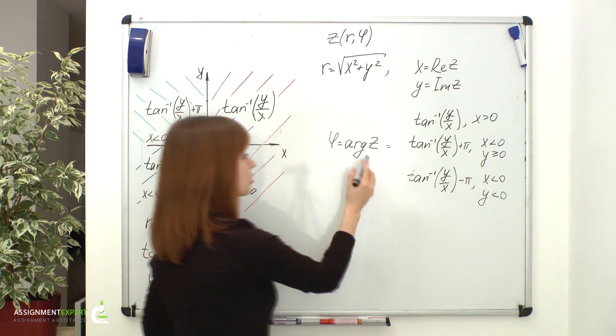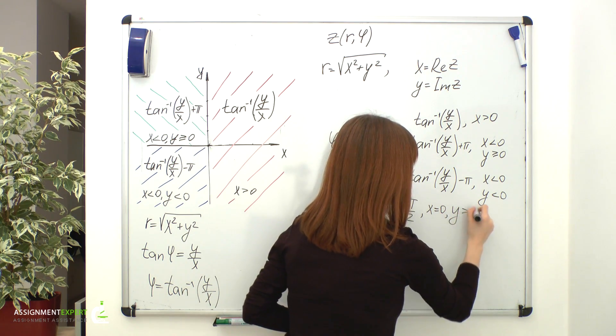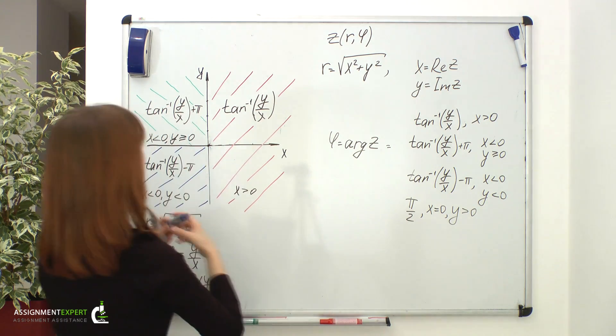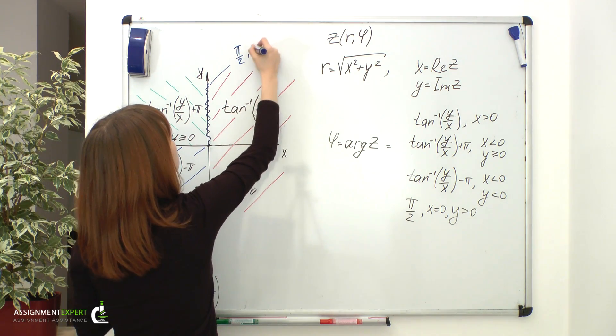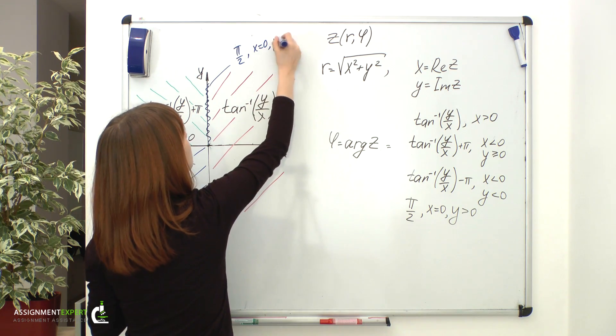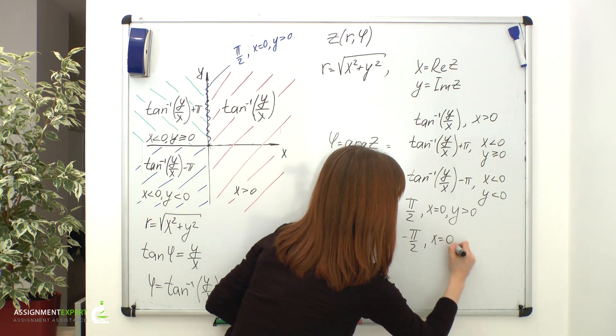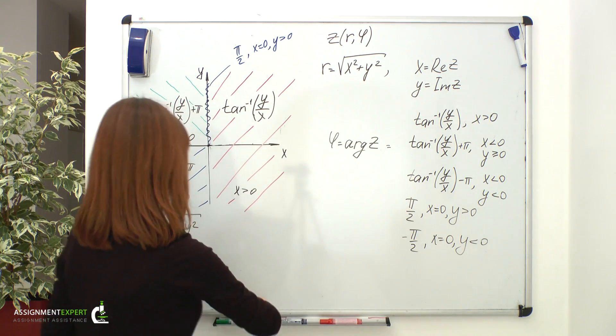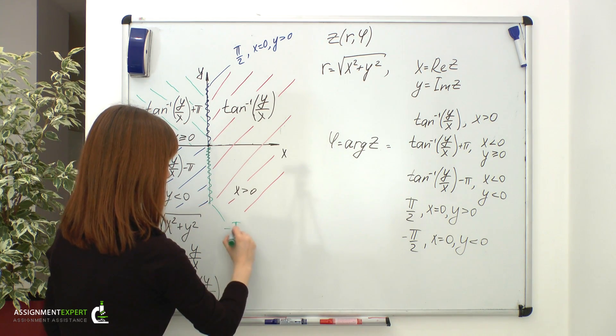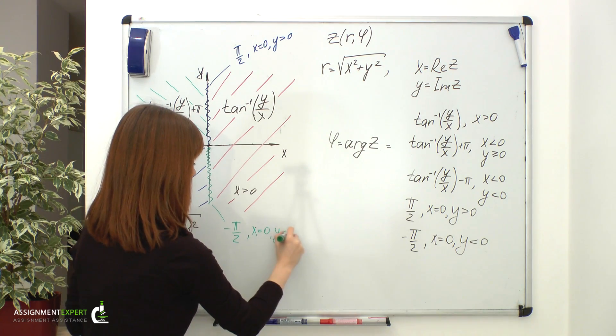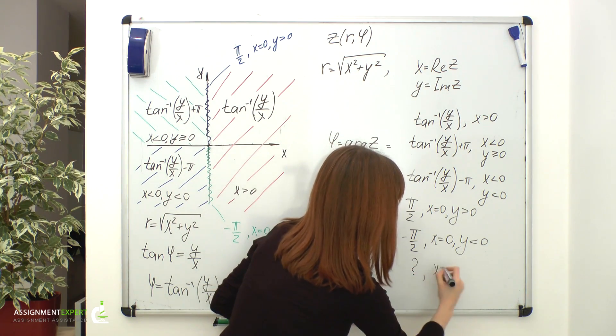Then there are special cases. Argument of z equals pi over 2 when x is equal to 0 and y is greater than 0. Negative pi over 2 for x equal to 0 and y less than 0. And finally, argument of a complex number is indeterminate for x and y being equal to 0.